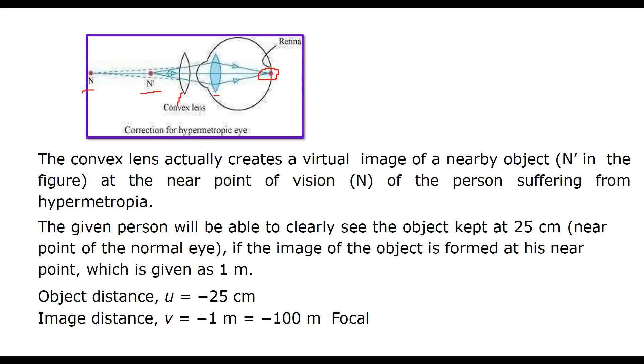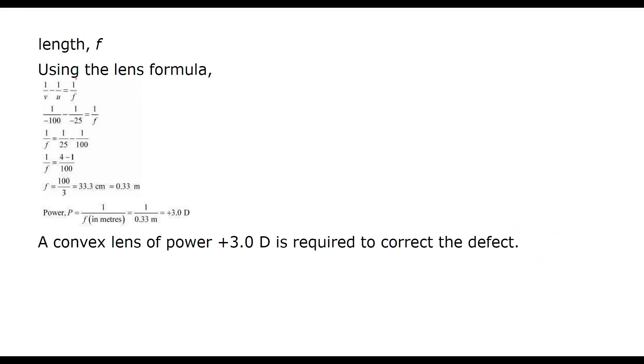The given person will be able to clearly see the object which is kept at 25 centimeter, the near point of the normal eye. And if the image of the object is formed at his near point which is given as 1 meter - so we will use these values u as minus 25 centimeter, v as minus 1 meter. We will change it to centimeter, multiply it by 100, so minus 100 centimeter. Now we have lens formula, let us put this value and solve it. F will be 0.33. Power is 1 by f which is 1 by 0.33 meter which is 3.0 diopter with plus sign. So convex lens of power plus 3.0 diopter is required to correct this defect.